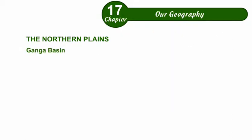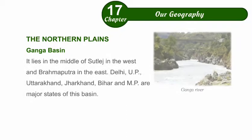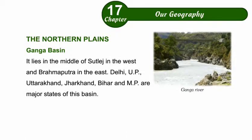Ganga Basin lies in the middle, with Sutlej in the west and the Brahmaputra in the east. Delhi, UP, Uttarakhand, Jharkhand, Bihar, and Madhya Pradesh are the major states of this basin.